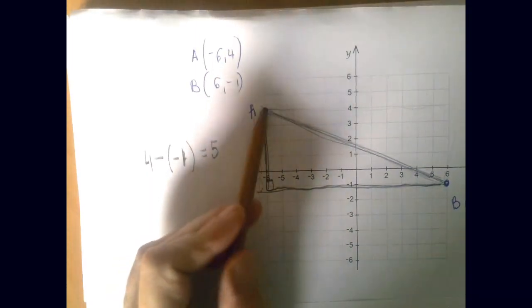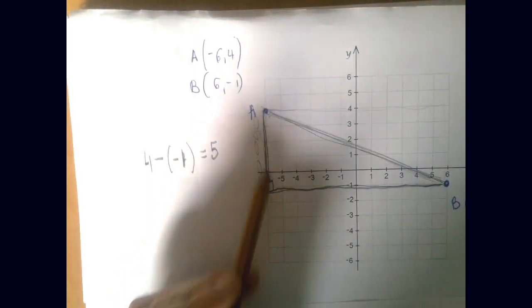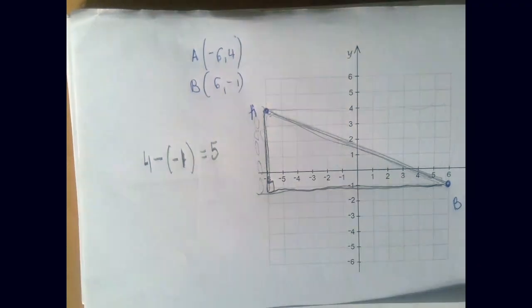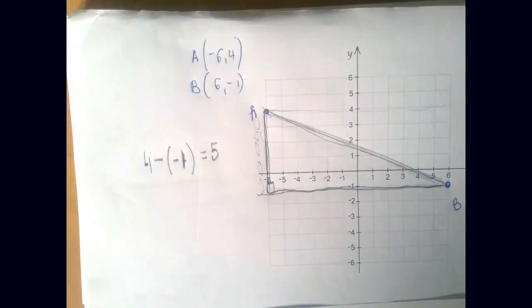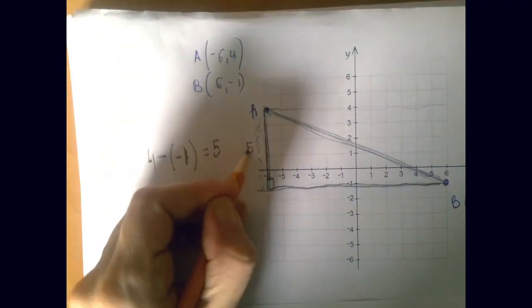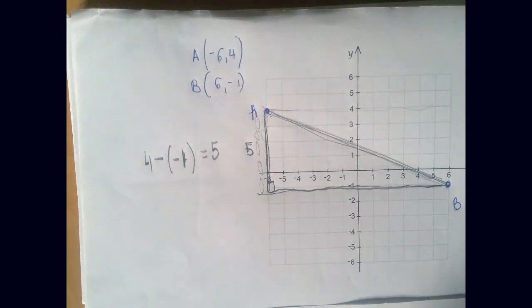That would be the same thing as counting how many line segments are lined up here. It's good to know the algebraic version, because what if the numbers are too big for us to sit there and count line segments? Basically, just subtract the coordinates. So this vertical side of the triangle is 5 units long.